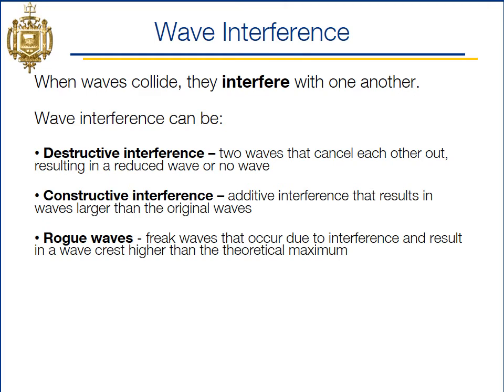When waves are interacting — as in seas, where you have different wavelengths and different frequencies interacting — they will interfere with one another. That interference can be either destructive or constructive. Destructive is when the two waves basically cancel each other out, and constructive is when they add to one another to make larger waves. You've probably all heard the term rogue waves — that's basically the ultimate in constructive interference, the perfect storm of everything coming together to give you a freakishly high wave.